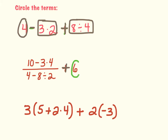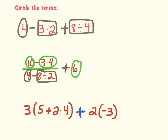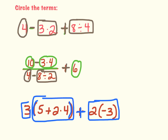In the next problem, there's an addition sign, so I know what's back there is a term. Inside the division problem I can still have terms — up top I see a subtraction sign, so my terms are 10 and 3 times 4. On the bottom, there's also a subtraction sign, so my terms are 4 and 8 divided by 2. In the last one, there's an addition sign — one term is multiplying, and things in parentheses count as a term. Inside the parentheses you also follow order of operations, so 5 and 2 times 4 are terms inside there.